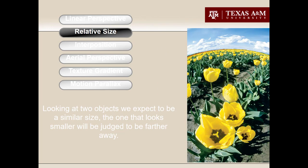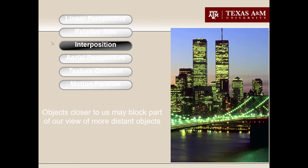Relative size is the second monocular cue: when looking at objects we know are similar to each other in size, the one that looks smaller is judged to be farther away — not actually smaller, just more distant. Third is interposition — inter meaning between, position meaning location. Objects that cover up or block part of our view of other objects are closer; the ones that are blocked or occluded are farther away.